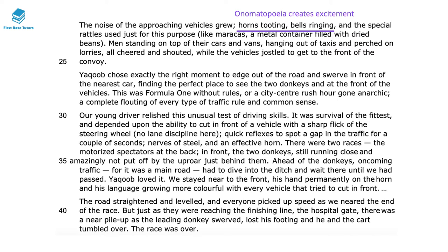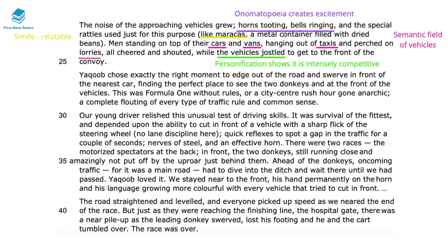There's a lot of onomatopoeia here — when we learn that the horns are tooting and bells are ringing, the words 'tooting' and 'ringing' really create excitement and suddenly frenzied activity. The simile 'like maracas' is really relatable and creates a vivid image in our minds. The narrator Emma Levine is proven wrong — she was very impatient initially and was told to be patient, and now the race has suddenly started. There is also a semantic field of vehicles: cars, vans, taxis, lorries. Ironically, they're not the ones racing — they're just following the donkeys to see which will win. The vehicles are personified to show how intensely competitive this race is, with people jostling for space, though of course there's also an element of danger with so many cars crowded together chasing the donkeys.